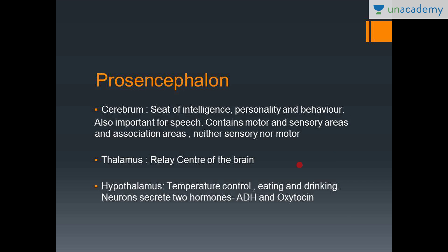The thalamus is basically the relay center of the brain. It is like a central station to which all impulses come first and then are distributed to the cerebrum. The other way is also true: all impulses from the cerebrum first go to the thalamus and then they go downwards to the other parts of the body.